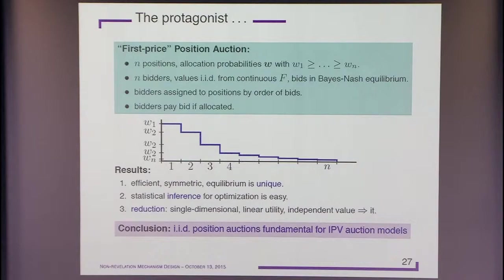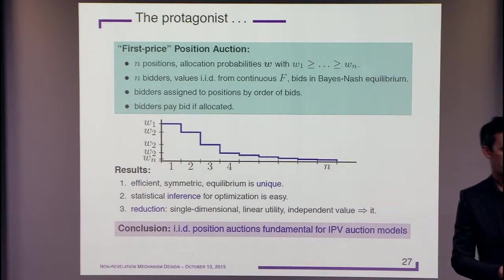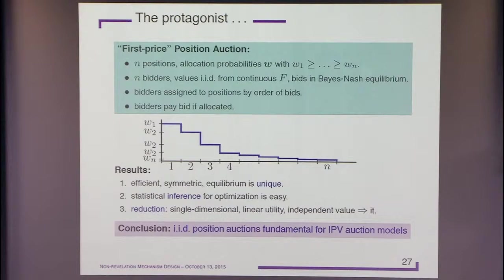To conclude: iid position auctions are actually implicit in every independent private value model, and therefore worthy of very careful study. They have all these nice properties — uniqueness, efficiency, and tractable inference — and thank you.